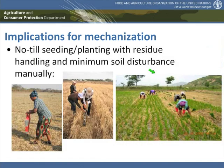Coming to the special tools, starting at the manual level, we have quite nice tools for manual, no-disturbance direct seeding — what we call no tillage. On the left side, you see a manual jab planter, which allows you to punch the seed into the soil through a residue cover, and along with the seed you can also place some fertilizer.